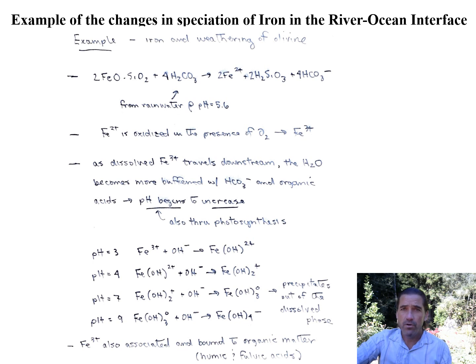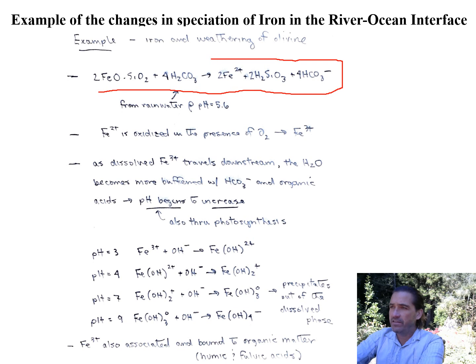Let's do an example where we weather a rock and then that material is transported through the estuary and into the ocean. Let's see what happens in this example using iron and how its speciation changes as it goes through this process. To start, we have olivine here. I mentioned in the first video of Chapter 9 that this mineral is easily weathered because it's in the form of iron 2, and with rainwater and with subsequent oxidation, we get iron 3 to be formed within the river water.